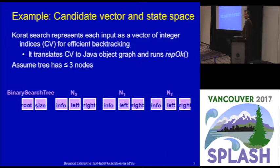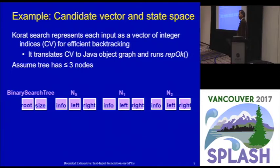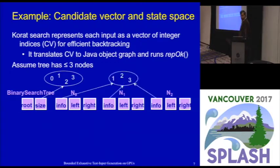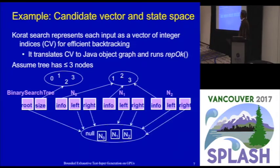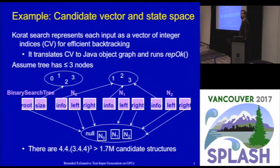Here is an illustration of how you can encode an object graph as a vector of integer indices. For creating tests with up to three nodes, the tree object has fields root and size, and each node has fields info, left, and right. A candidate vector has 11 elements, one per object field of interest. With a bound of three, size can take one of four values: 0, 1, 2, or 3. Integer elements can take one of three values. Each reference field can be null or point to one of the nodes. Even this small state space has over a million candidates, and even a slightly larger bound causes state space explosion.